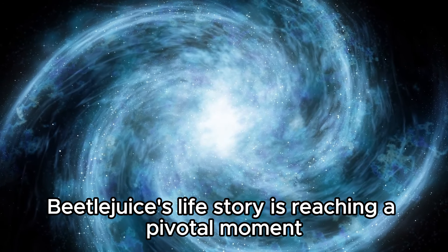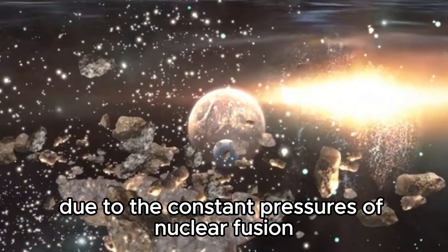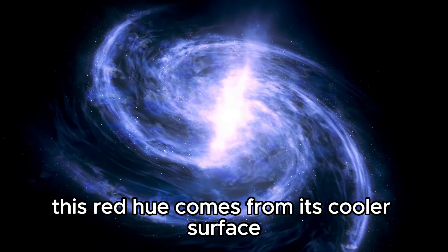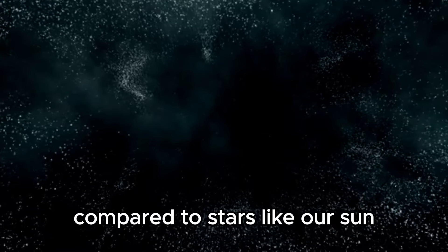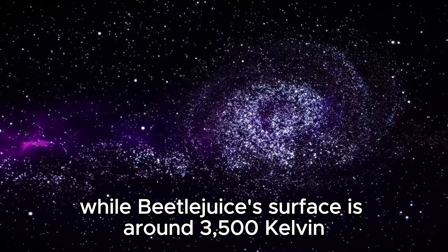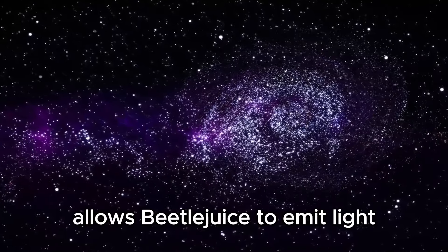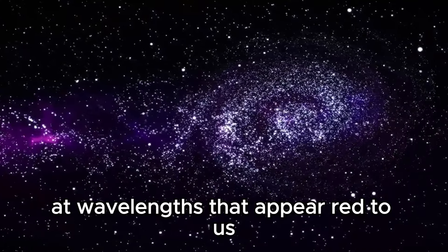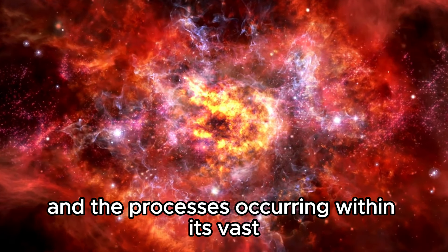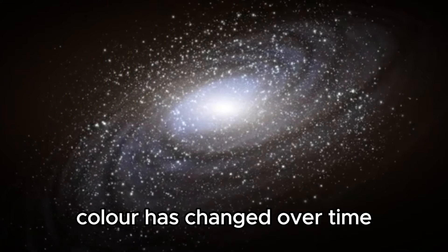Now in its final stage as a red supergiant, Betelgeuse's life story is reaching a pivotal moment. Stars like Betelgeuse change over their lifetimes due to the constant pressures of nuclear fusion and gravity. Another aspect that makes Betelgeuse stand out is its unique reddish color. This red hue comes from its cooler surface compared to stars like our sun. The surface of the sun is about 5,500 Kelvin, while Betelgeuse's surface is around 3,500 Kelvin.